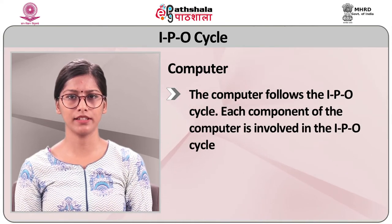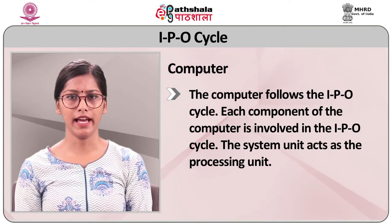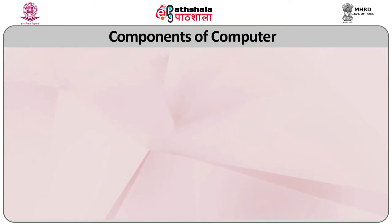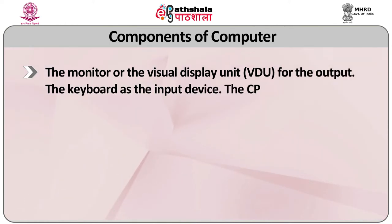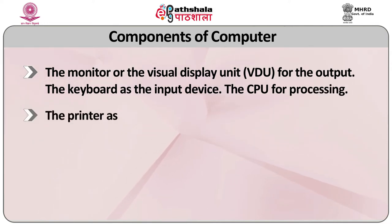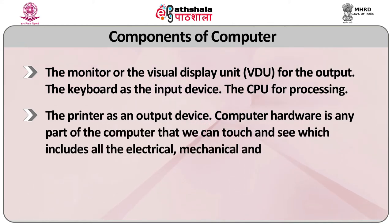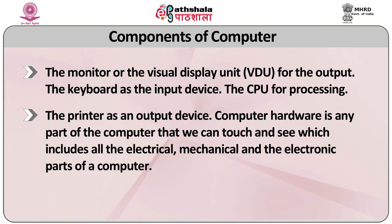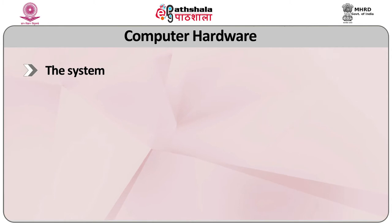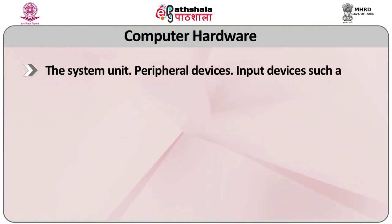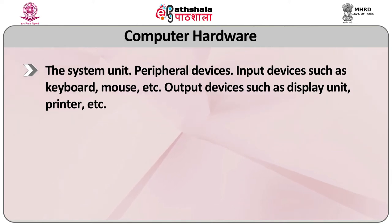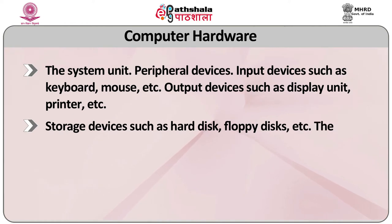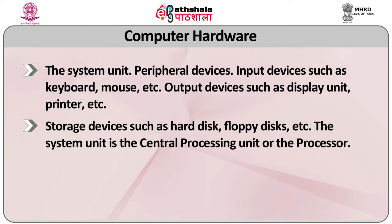Each component of the computer is involved in the IPO cycle. The system unit acts as the processing unit. The components of a computer are as follows: the monitor or visual display unit (VDU) for output; the keyboard as the input device; the CPU for processing; and the printer as an output device. Computer hardware is any part of the computer that we can touch and see, which includes all the electrical, mechanical, and electronic parts. Computer hardware includes the system unit, peripheral devices, input devices such as keyboard and mouse, output devices such as display unit and printer, and storage devices such as hard disk and floppy disk.